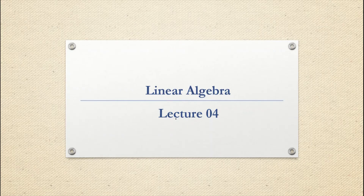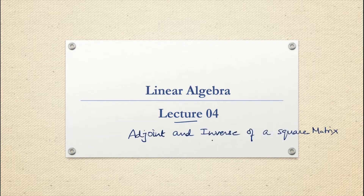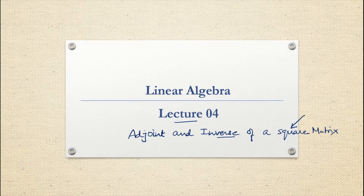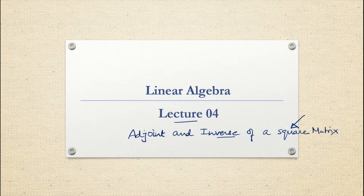Hello everyone, I'm Monica Bhushan and today we are starting lecture number 4 under linear algebra. In today's class we are going to see how to find the adjoint of a matrix and the inverse of a square matrix using the adjoint matrix. The first criteria is that the matrix should be an n×n matrix — that means a square matrix.